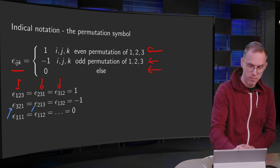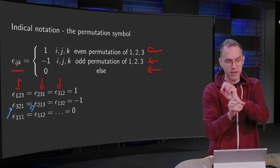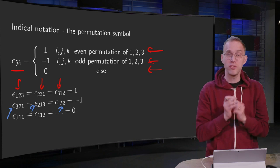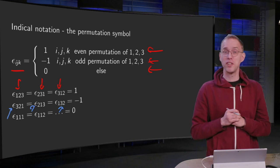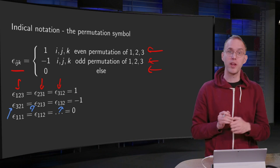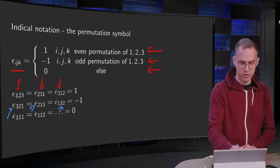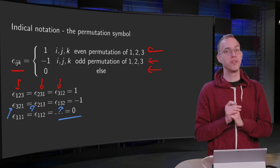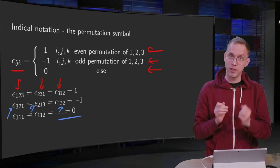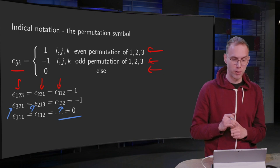Now if you put them in the wrong order, so epsilon_321 you get minus one. We do the same trick: take the three and put it at the back, and we get epsilon_213, that's also minus one. Then take the two and put it at the back, we get epsilon_132, also minus one. So those three are minus one, and the other 21 are all zero — for example, epsilon_111, epsilon_112, epsilon_113. Most of them are zero; we have only three which are one and only three which are minus one.